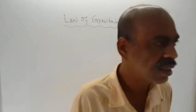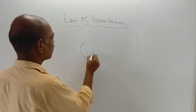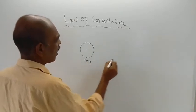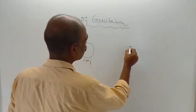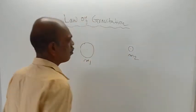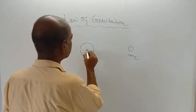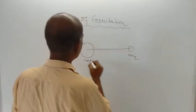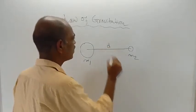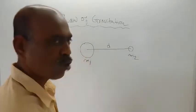Suppose there is one mass M1 — a bigger mass — and a smaller mass M2. They are separated by a distance D, measured center to center. F is the force of attraction between these two objects.